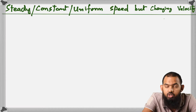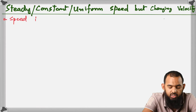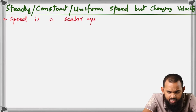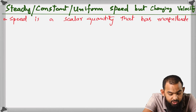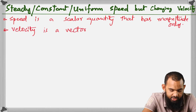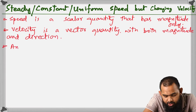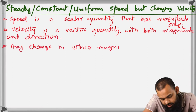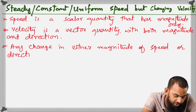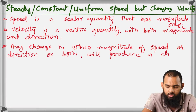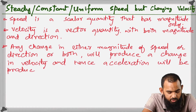This is an older concept we need to recall, because in circular motion it will be very important to reiterate. Speed is a scalar quantity with magnitude only; velocity is a vector quantity with both magnitude and direction. Any change in either the magnitude or direction of velocity will produce an acceleration.